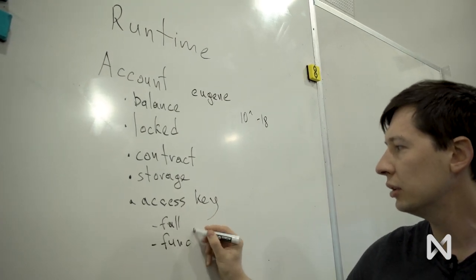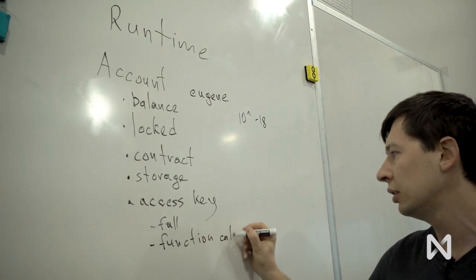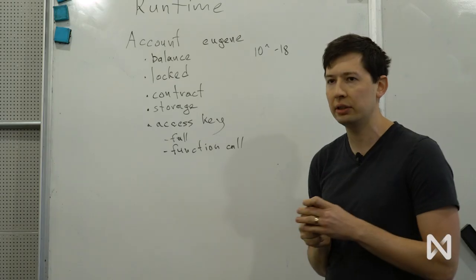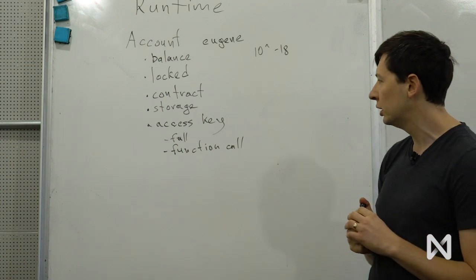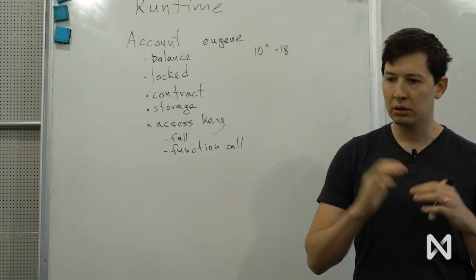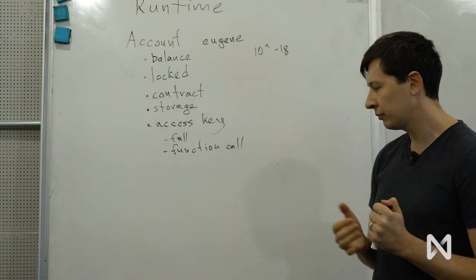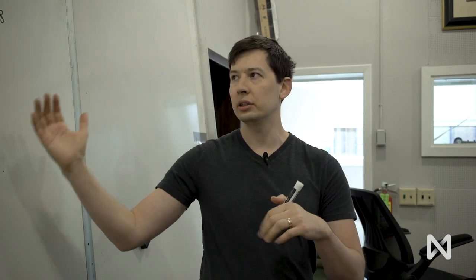And second is a function call. Function call is a specific access key that only grants permission for calling some other contract. It guards which account it can call, and also how much tokens it can use to pay for the fees, and which methods it can call. So it can be very restrictive. And we'll come back to this slightly later once we talk about transactions.